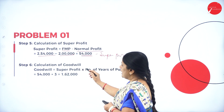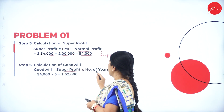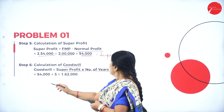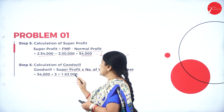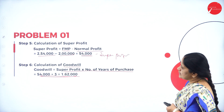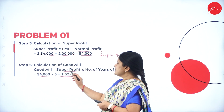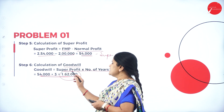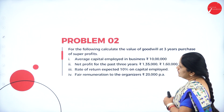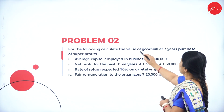Goodwill is calculated as super profit multiplied by number of years of purchase: 54,000 into 3 equals 1 lakh 62,000. So the goodwill of this company is valued at 1 lakh 62,000.